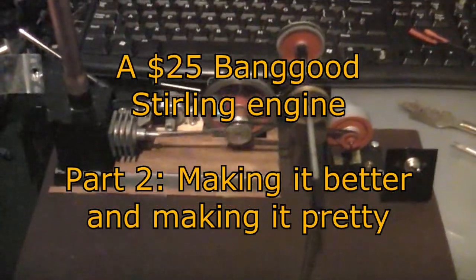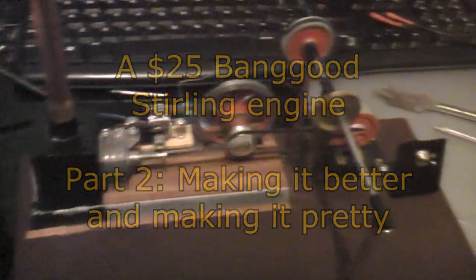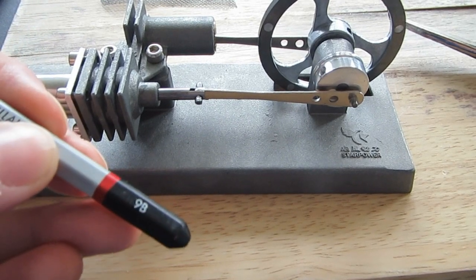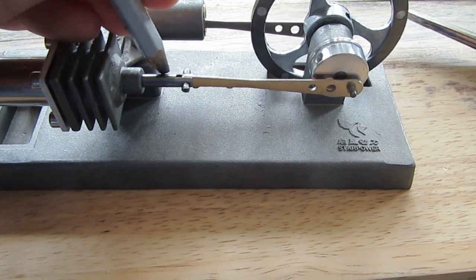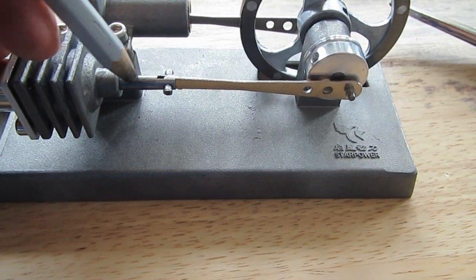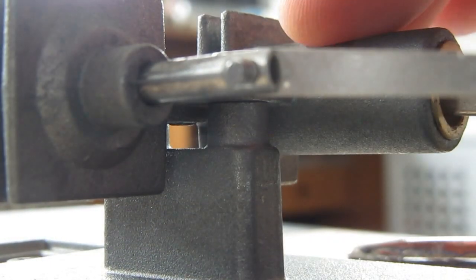A $25 Banggood Sterling engine, part two: making it better and making it pretty. To make it better, I'm going to try some different things. First is graphite from this 9B pencil. 9B is a very soft kind of graphite. I use these pencils a lot back when I still sketched on paper, now it's all digital. Graphite has very nice lubricating properties. I'm going to try to use it to smooth things up a bit. Later I'll replace this with PTFE spray.